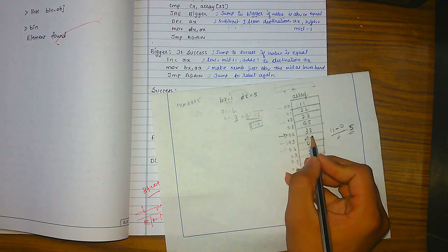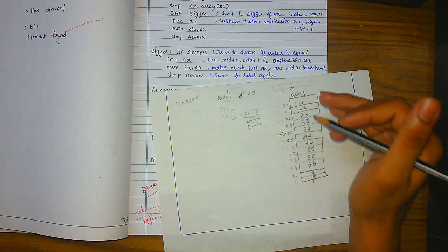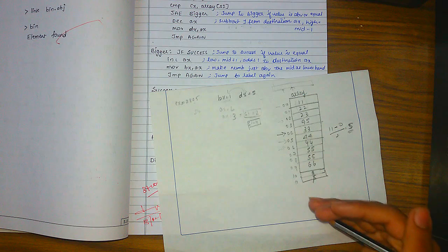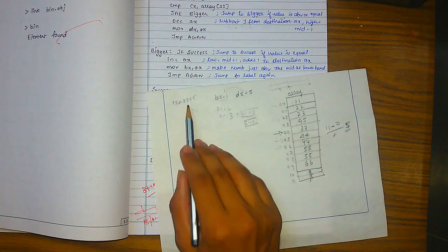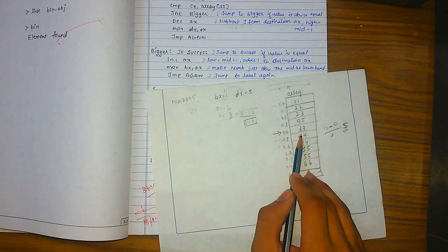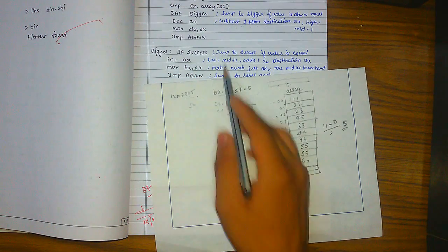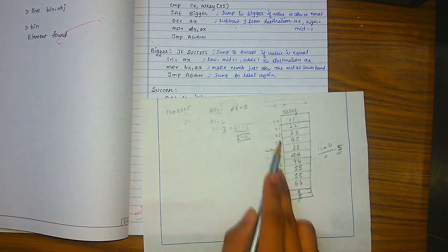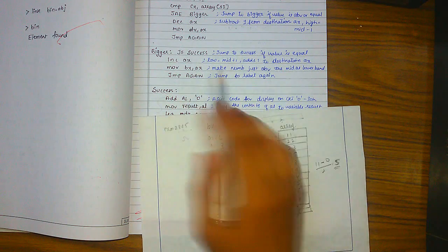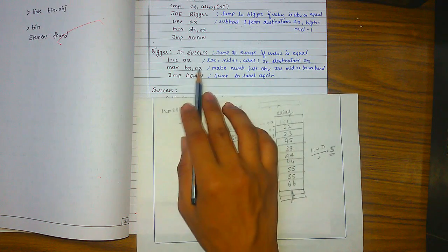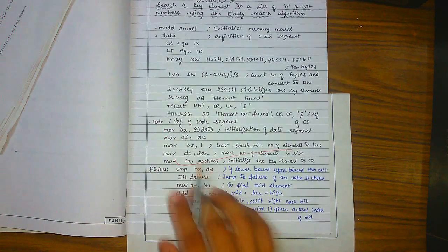At array index 4, the value is 3 (from our array: 3, 4, 5). This is compared with the search key cx. If it's lesser, we go below; if greater, we go to the bigger part. A 'jump above or equal' instruction handles the bigger case, and 'jump equal' moves to success when a match is found.